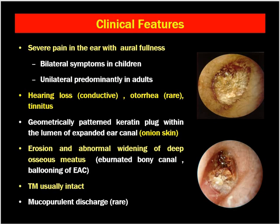The patient may complain of hearing loss, which is usually of the conductive type, and discharge from the ear, which is rare — occasionally there might be minimal discharge and tinnitus. On examination, we can see a geometrically patterned keratin plug within the lumen of the expanded external auditory canal — basically the bony canal — and it appears like onion skin.